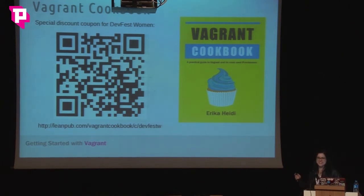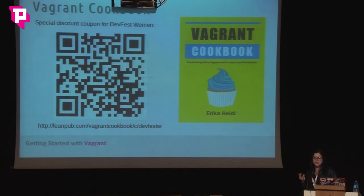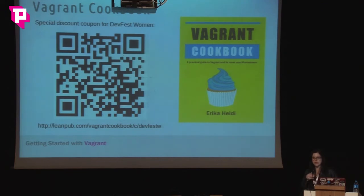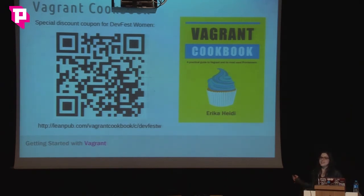This book goes deeper into the three provisioners — Puppet, Ansible, and Chef — has a quick getting started guide, and also covers advanced topics like how to deploy real servers into cloud services using Vagrant and how to optimize everything. I will post the link later.